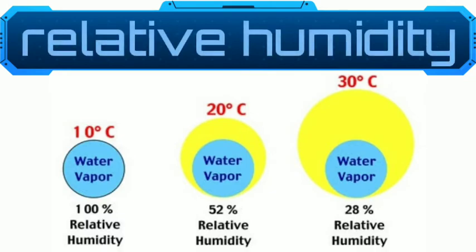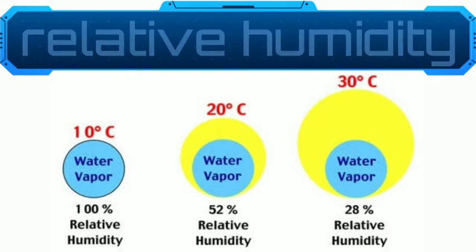Relative humidity is the ratio between the amount of water vapor present in the air and the maximum amount that can be held by the air at the given temperature. It is expressed in percentage. Suppose the air can hold a maximum of 50 grams of water vapor at a given temperature, but only 25 grams are present — the relative humidity will be 50%. The relative humidity of saturated air is 100% and that of absolute dry air is 0%.